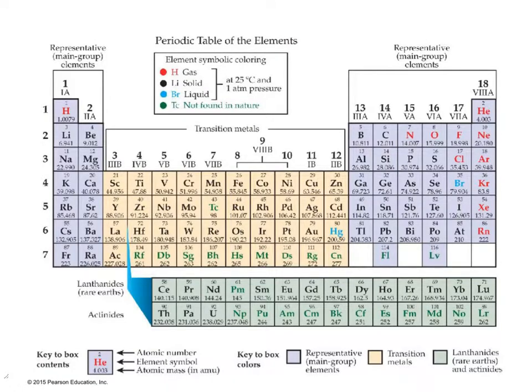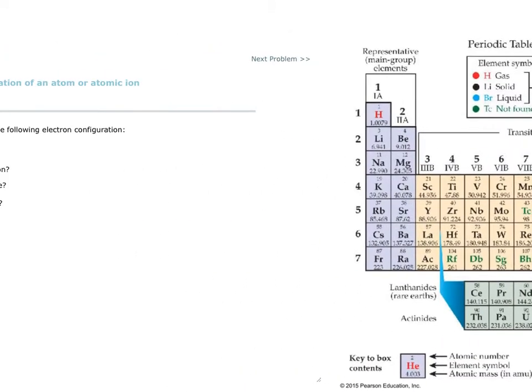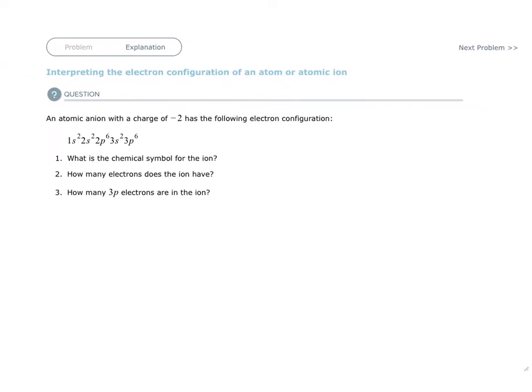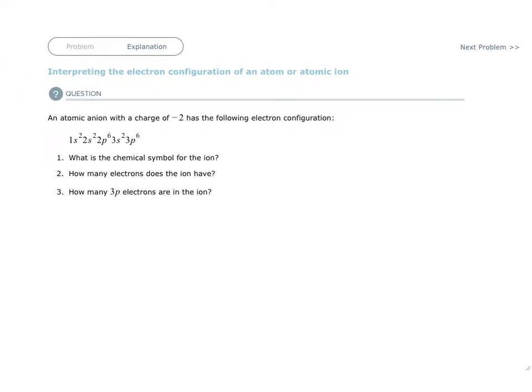But it says that it's not argon because it says that it's an anion with a negative 2 charge. And argon is just a neutral element. So I need something that is 2 less than argon, 2 less p electrons than argon. Because if it steals 2 in order to have the configuration of argon, then it's an ion.